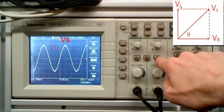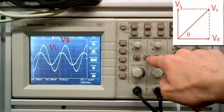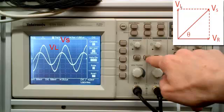So on channel 1 we have the supply voltage. On channel 2 we have the inductor voltage. This is leading the supply voltage by some angle less than 90 degrees. And looking at our vector diagram, this is what we expect.